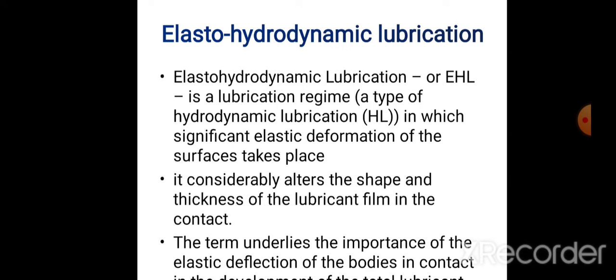In short, elasto hydrodynamic lubrication is a type of hydrodynamic lubrication where, along with the dynamic action, there is significant elastic deformation of the bodies. This elastic deformation provides a pathway for lubrication — that is why it is named elasto hydrodynamic lubrication. When two bodies are in contact, elastic deformation occurs and creates a cavity in the elastic areas. That cavity plays the role of a reservoir for lubrication.